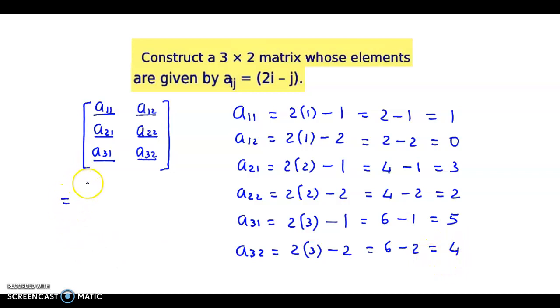So our matrix will be—writing all the elements—the matrix is 1, 0, 3, 2, 5, and 4. So this is the required matrix.